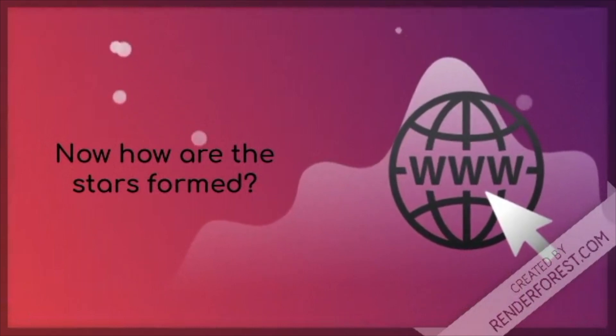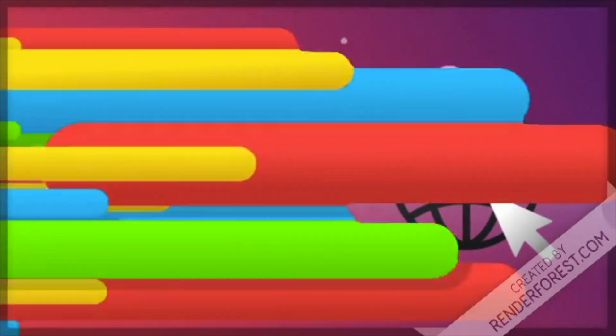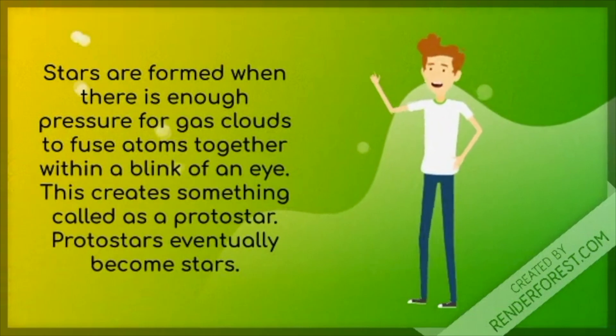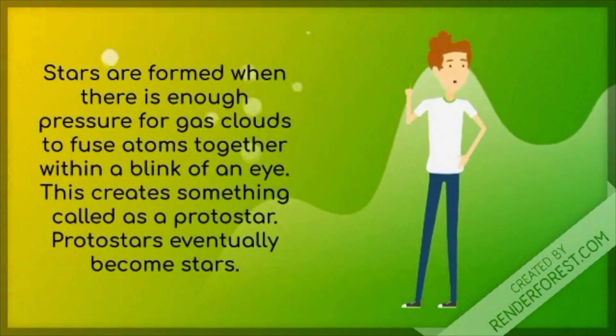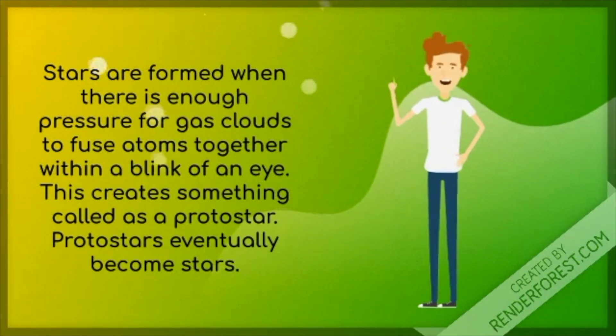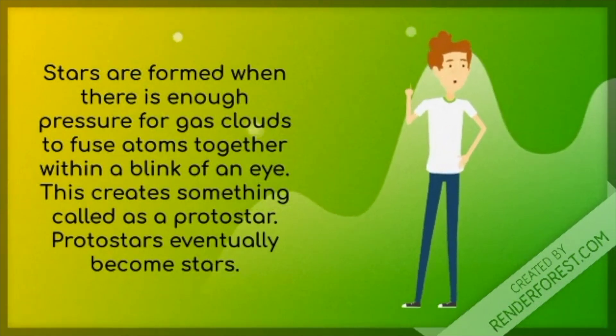How are stars formed? Stars are formed when there's enough pressure for gas clouds to fuse atoms together within a blink of an eye. This creates something called a protostar. Protostars eventually become stars.